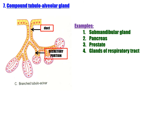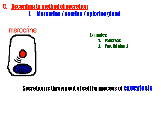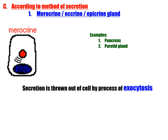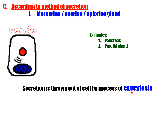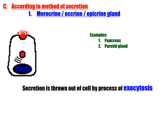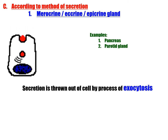Classification according to the method of secretion: merocrine, apocrine, or holocrine. Merocrine (eccrine) gland: the secretion is released by exocytosis without losing any part of the secretory cell. Examples: salivary gland, some sweat glands, and the pancreas.